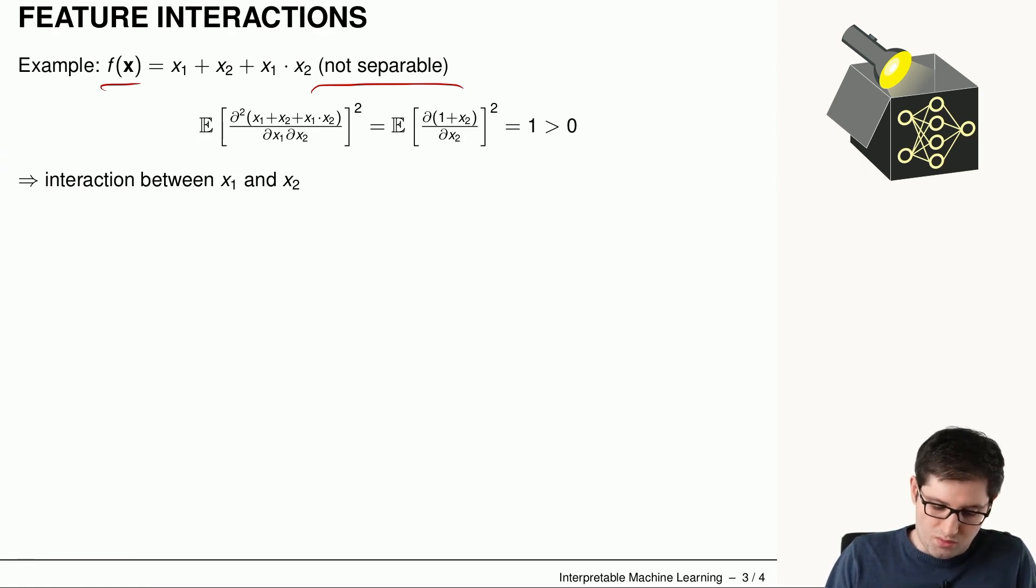Meaning that we just take the derivative of this function with respect to x1, which basically then ends up in this value here, 1 plus x2. And then take again the derivative with respect to x2. Of course, we can already see that we get here a value that is larger than zero.